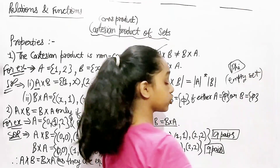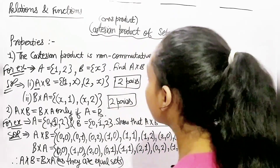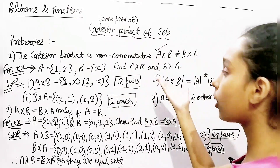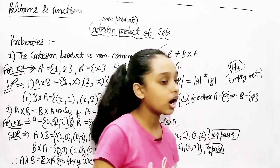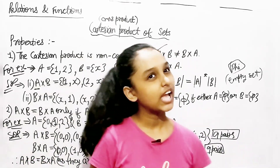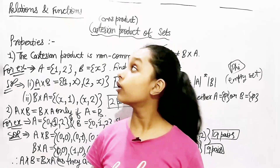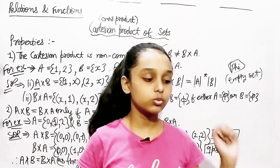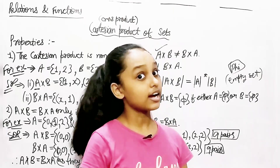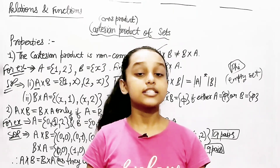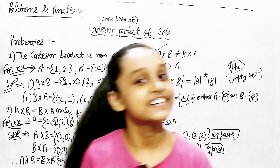So those were the four properties of the Cartesian product of sets. In the next video we'll continue with the next topic in this chapter. Thanks for watching and have a great day.